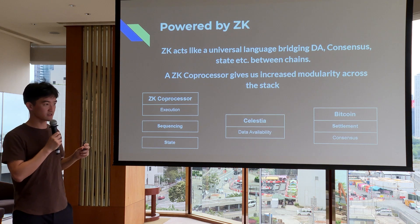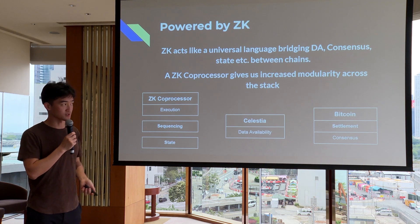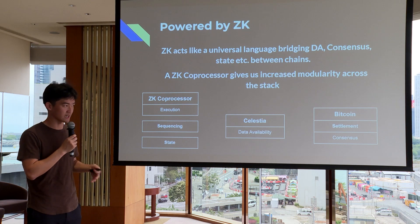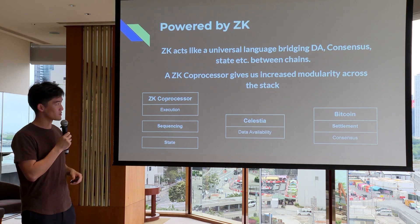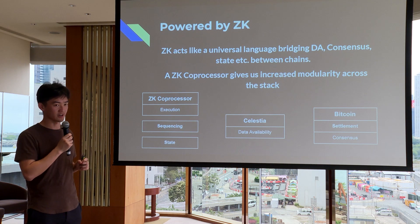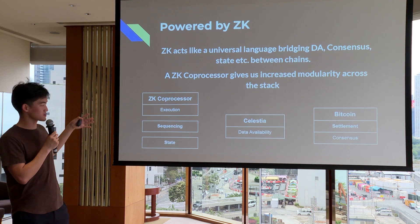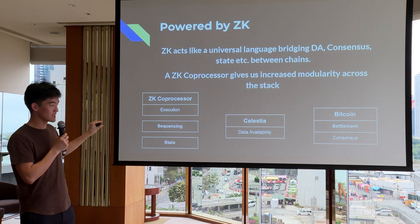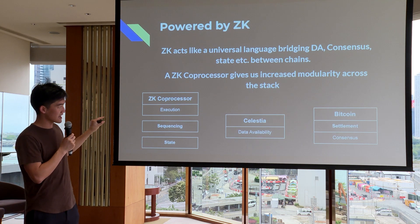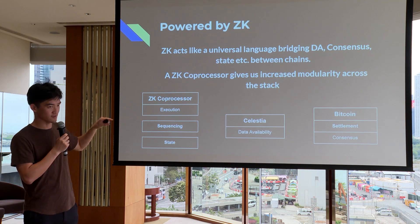Because ZK acts as a universal language that can bridge DA, consensus, and state between chains, it gives us a lot of modularity across the stack. The coprocessor's rollup is broken down into separate pieces — sequencing, state — and you can really move these around the stack, selecting different solutions for each different component.